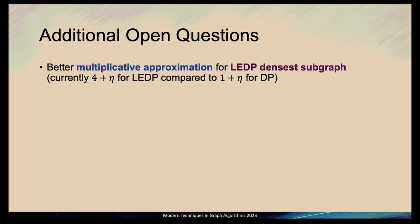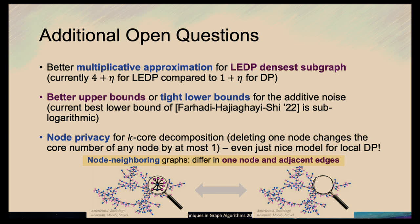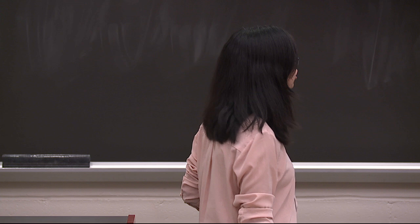Here are additional open questions. First, we showed a (4+η) LEDP algorithm for densest subgraphs — can you minimize that gap? There is currently a factor-4 gap between LEDP and DP in the multiplicative approximation. Second, can you show upper or lower bounds on the additive error for each of these algorithms? Third, and most importantly, node privacy is a major open question. Node privacy protects the private information of any individual — neighboring graphs differ by any node and all its neighbors. There is not even a definition for node privacy in the local model, so even coming up with a nice definition is an interesting open question.